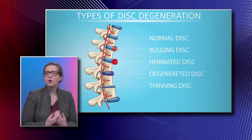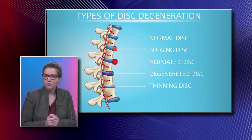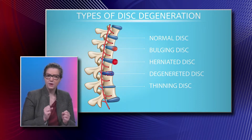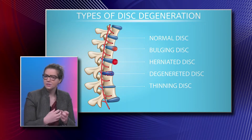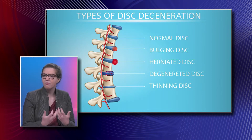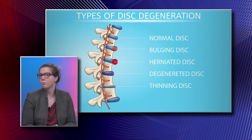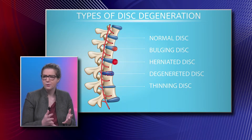A herniated or extruded disc means not only is there a bulge, but there's actually a piece of disc material that's pushed its way out of the annulus — a free-floating fragment within the canal. It's a more severe form of a bulging disc, but it's all part of a continuum.